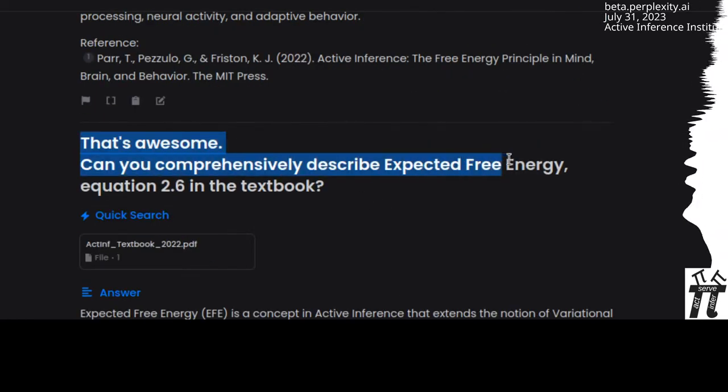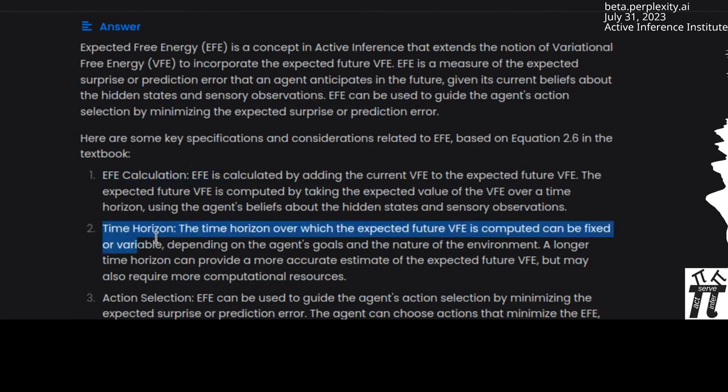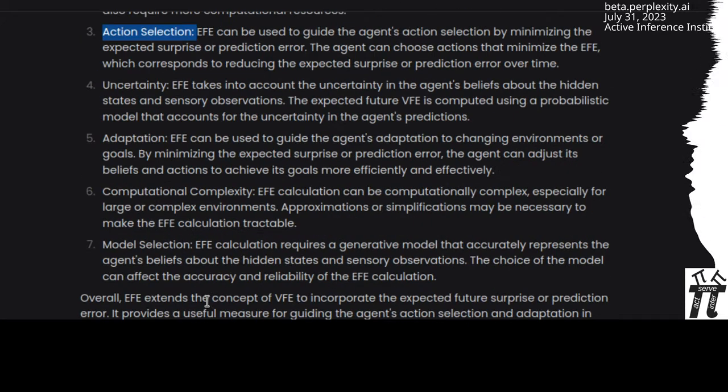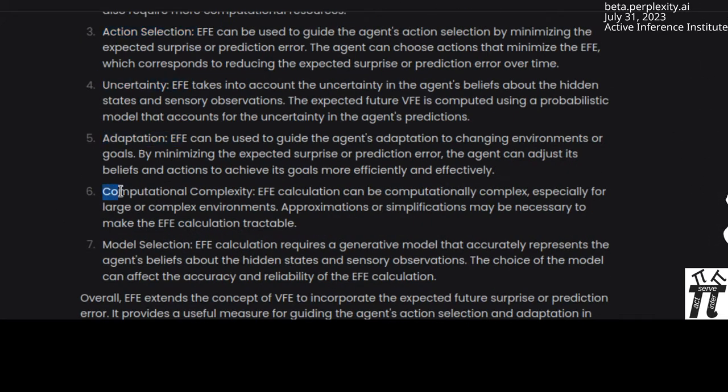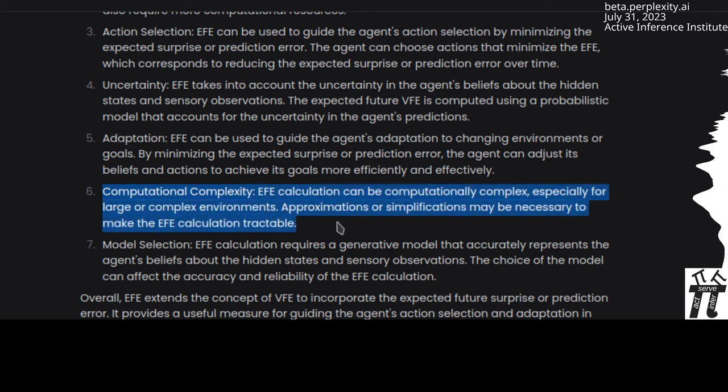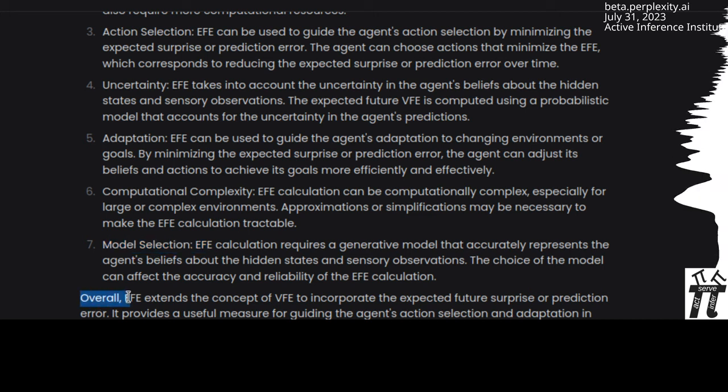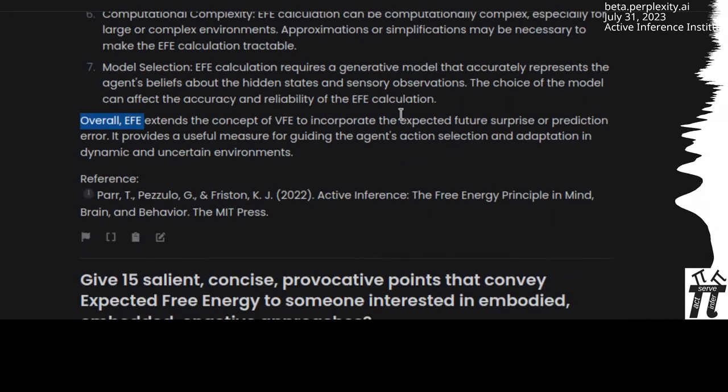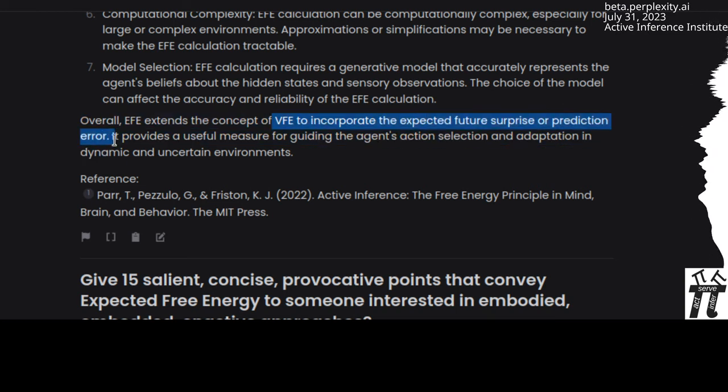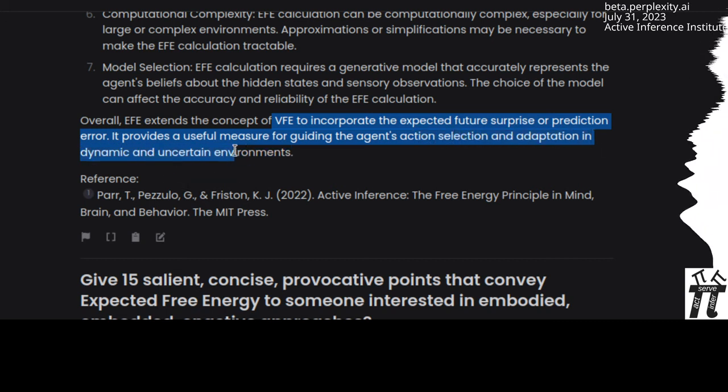That's awesome. Can you comprehensively describe expected free energy equation 2.6 in the textbook? Expected free energy, time horizon, action selection, uncertainty, adaptation, computational complexity, model selection. Overall, expected free energy extends the concept of variational free energy to incorporate the expected future surprise or prediction error. 100% true.